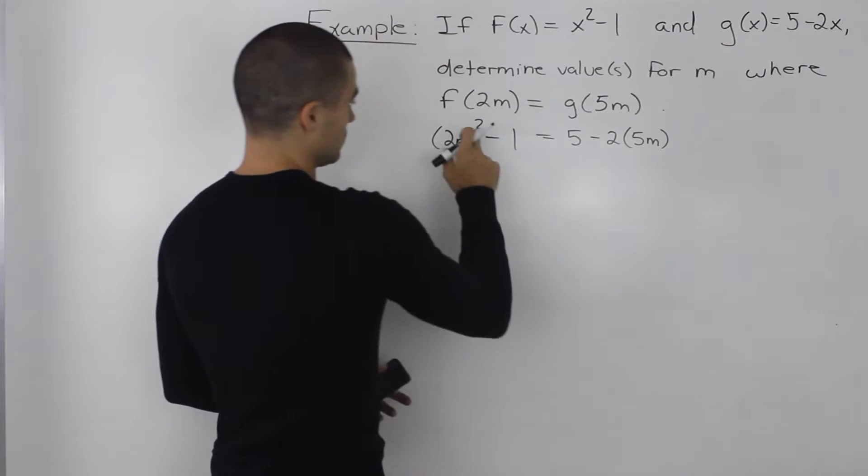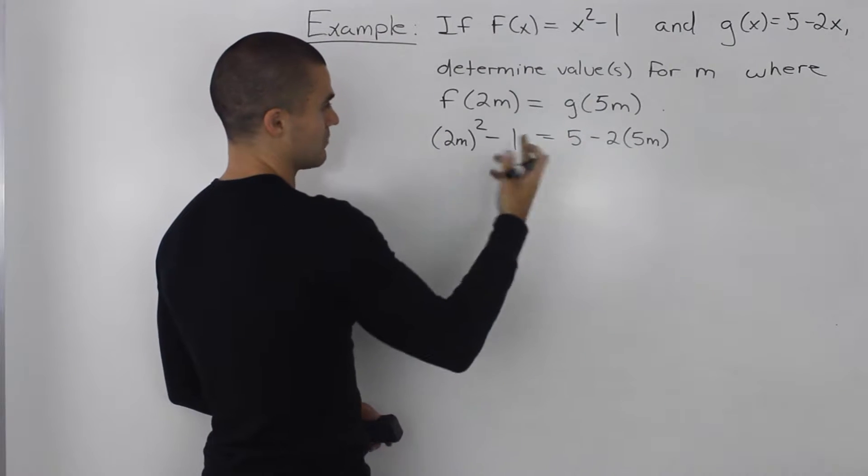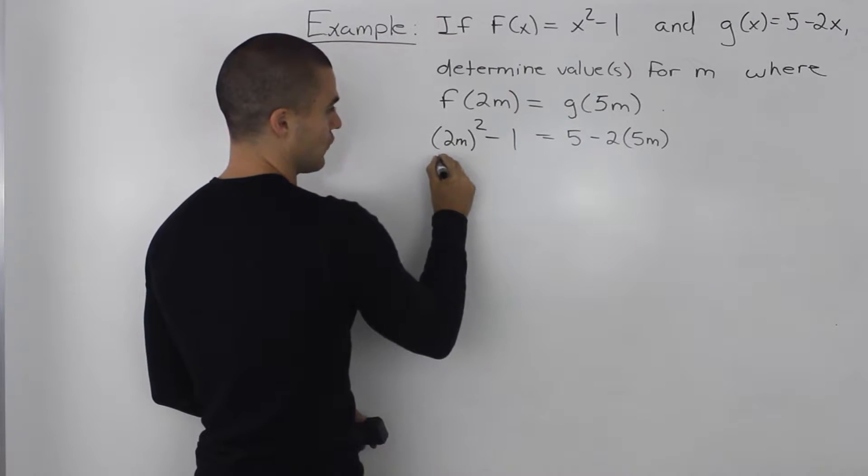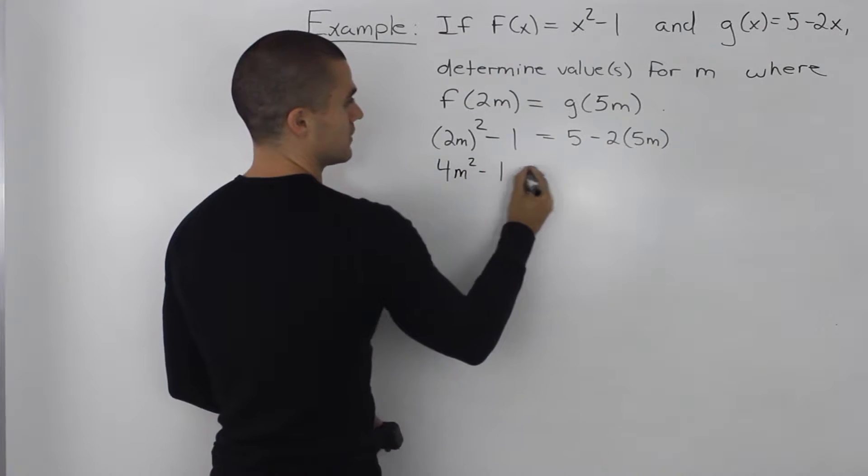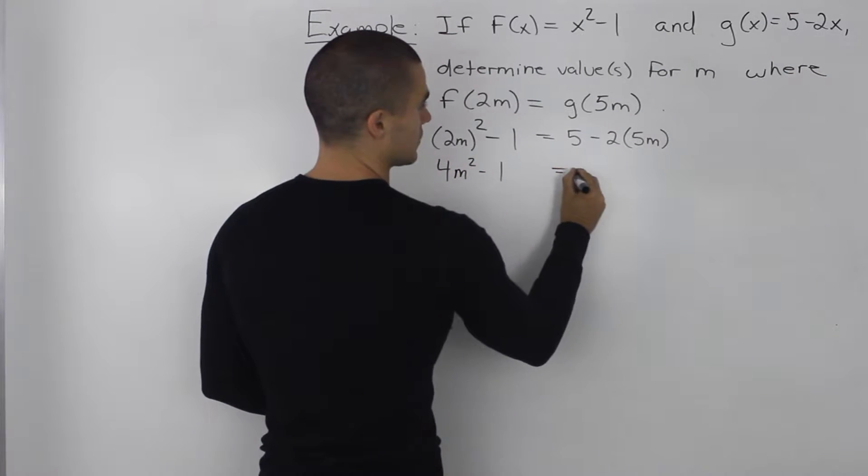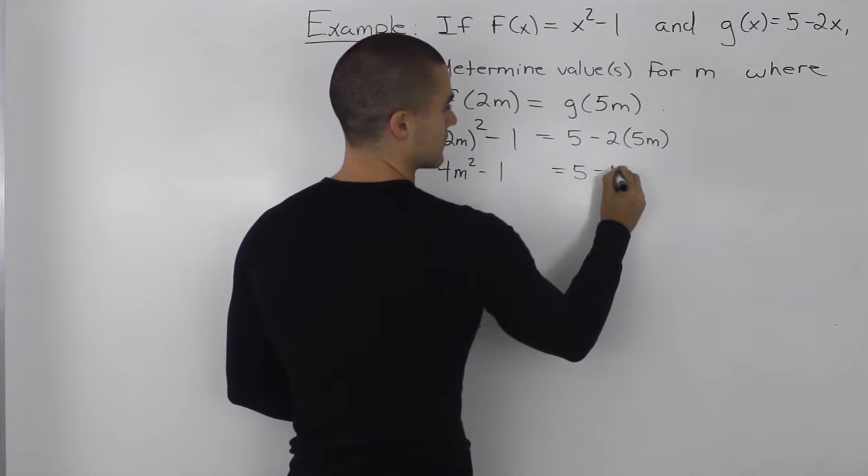So simplifying this now, this 2m squared, we would take everything in the bracket and take it to the power of 2. So 2 squared is 4 and then m squared is just m squared minus 1 equals 5 minus 2 times 5m is negative 10m.